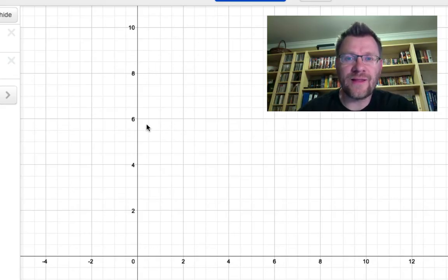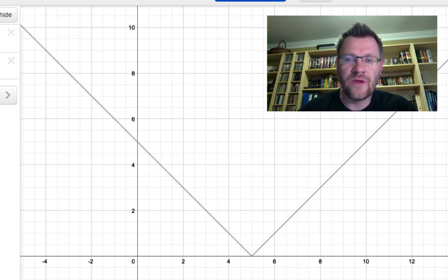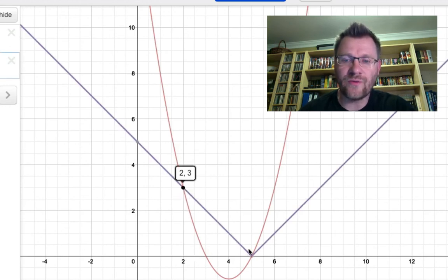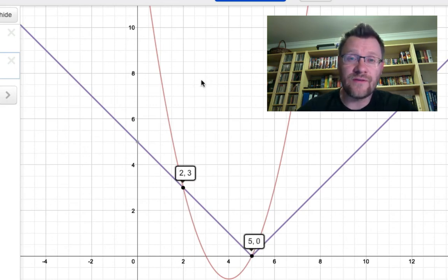To double check by graphing: we had |x - 5| and x² - 8x + 15. When we plot both on the same graph, there are two intersection points: one at x = 2 and another at x = 5. This shows why x = 4 isn't an actual answer—that's not where the two lines intersect.